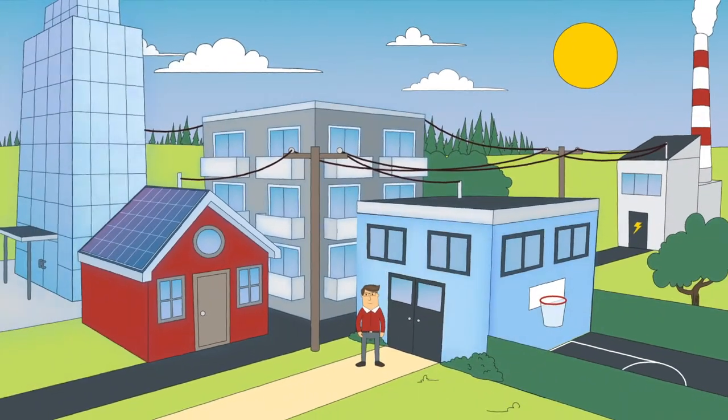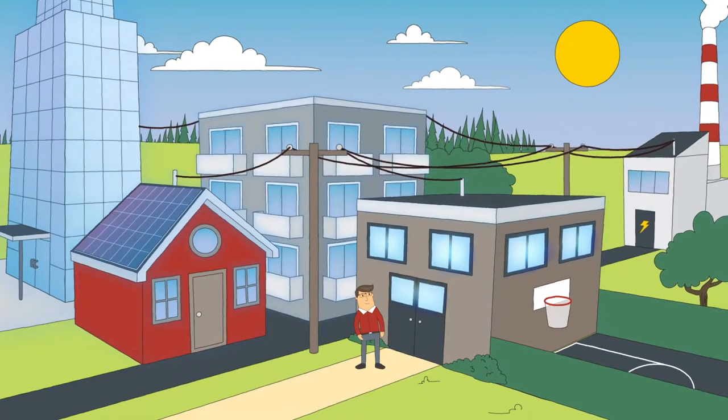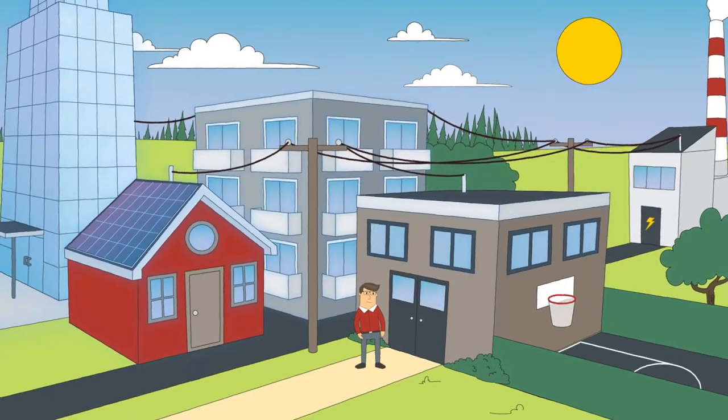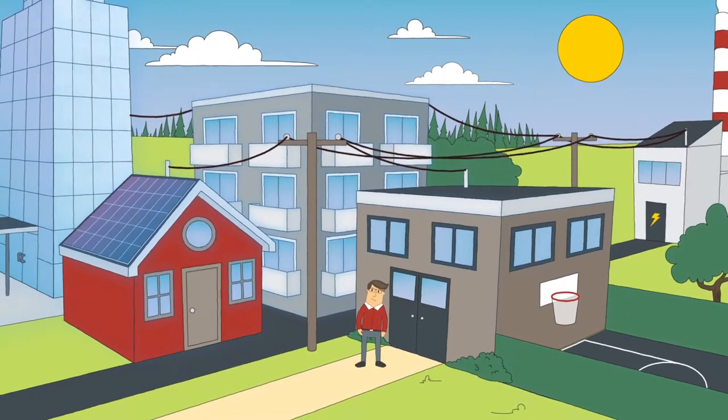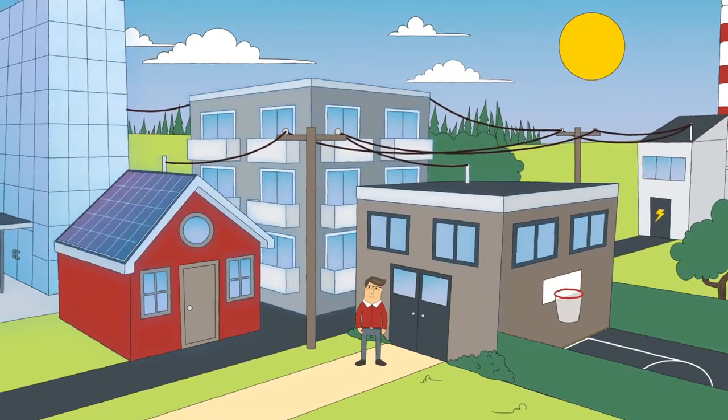Photovoltaic cells are integrated directly into cladding materials, shingles, or windows. They come in various colors, shapes, and sizes, and look like traditional building materials.